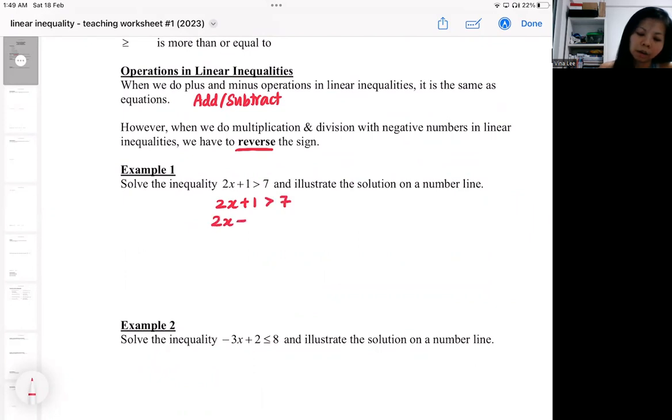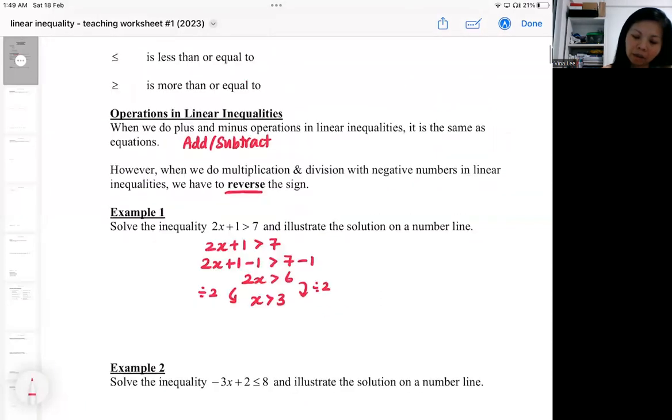Example 1 is just adding numbers on both sides. To start off, I'm going to subtract numbers on both sides. Subtracting numbers doesn't reverse the sign. And I'm going to divide by 2 so that I get a single X. When you divide by 2, 2 is a positive number, so I shouldn't reverse the sign.